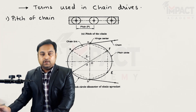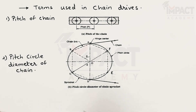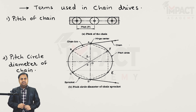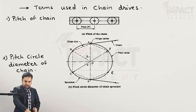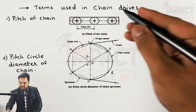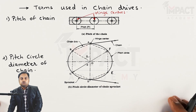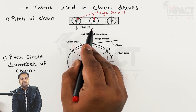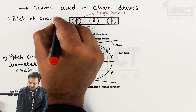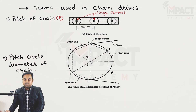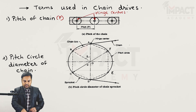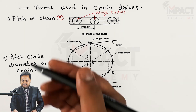The pitch of a chain is the distance measured between two adjacent hinge centers. On a chain we have a number of hinge centers, so when we measure the distance between adjacent hinge centers, that is called the pitch of the chain, denoted by P. This pitch remains constant throughout the length of the chain.